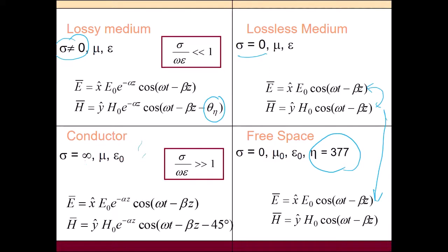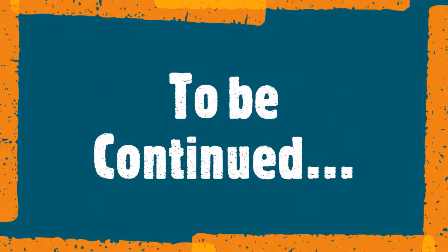Lastly, for conductors, we have very high conductivity, which means it can conduct currents. And then sigma divided by omega epsilon is very big. And we can see that between E field and H field we have a phase difference around 45 degrees. Hopefully you can see the difference between the types of media that we discussed so far.